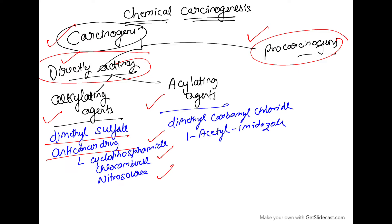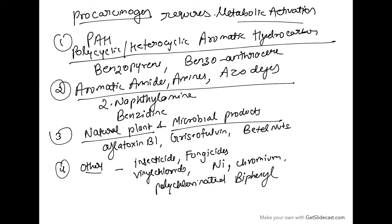Now talking about pro-carcinogens which require metabolic activation, examples include polycyclic or heterocyclic aromatic hydrocarbons like benzopyrene or benzoanthracene. Then we have aromatic amines or azodyes like 2-naphthalamine or benzidine. Then there are natural plant and microbial products like aflatoxin B1, griseofulvin, and betelnuts.